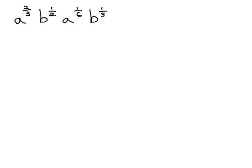In this video, we're going to look at using our exponent properties in order to simplify the expression a to the two-thirds, b to the one-half, a to the one-sixth, b to the one-fifth.